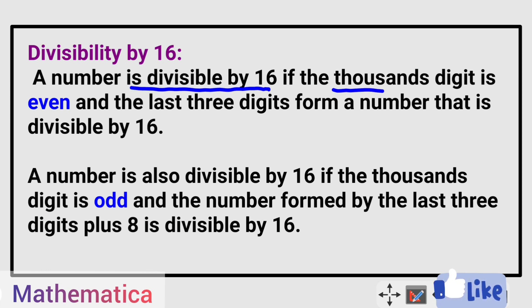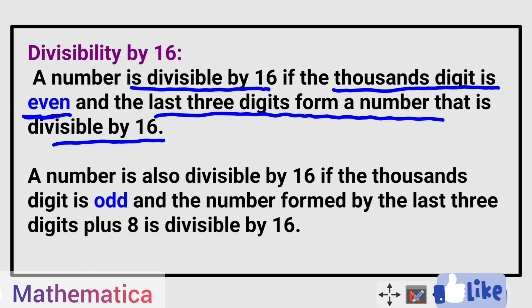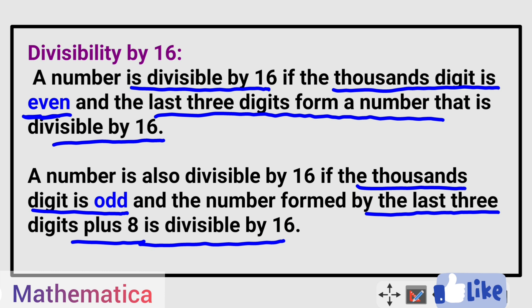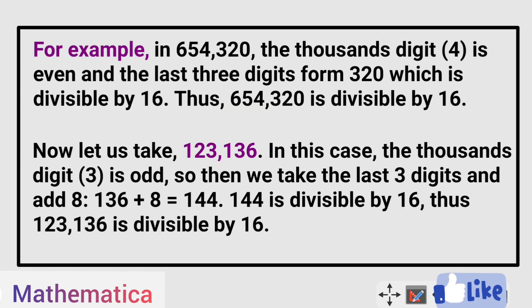Next is the divisibility rule for 16. A number is divisible by 16 if the thousands digit is even and the last three digits form a number that is divisible by 16. Secondly, if the thousands digit is odd, then you add 8 to the number formed by the last three digits, and if that result is divisible by 16, then the given number is divisible by 16.